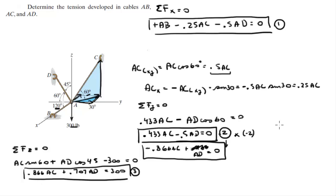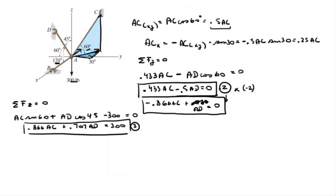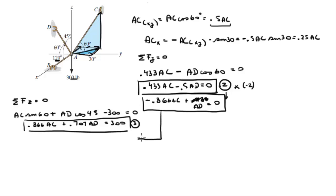And I'm going to rewrite it right below equation 3. Let me scroll down a bit to have more space. So I'm rewriting this right here. This is minus 0.866 AC plus AD is equal to 0. And then I'm going to just add them together. When you add these two equations together, this is negative and this is positive, so these two cancel out. 0.707 AD plus AD is 1.707 AD, and 300 plus 0 is 300. So you solve for AD and you get AD is equal to 175.7 pounds.